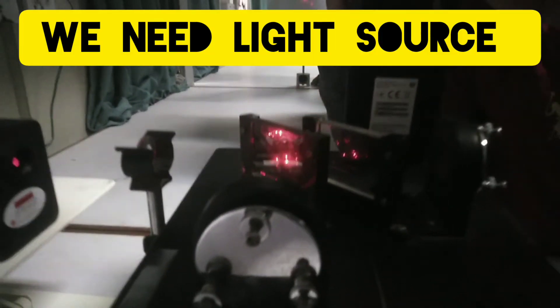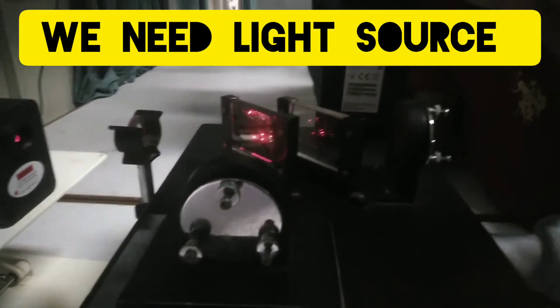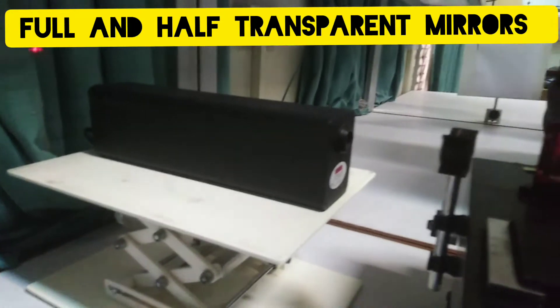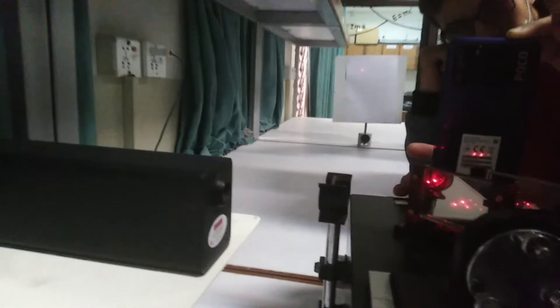Today we will discuss the Michelson interferometer. In this experiment, we can see the setup of the Michelson interferometer. The principle is that the Michelson interferometer produces interference fringes by splitting a beam of light.